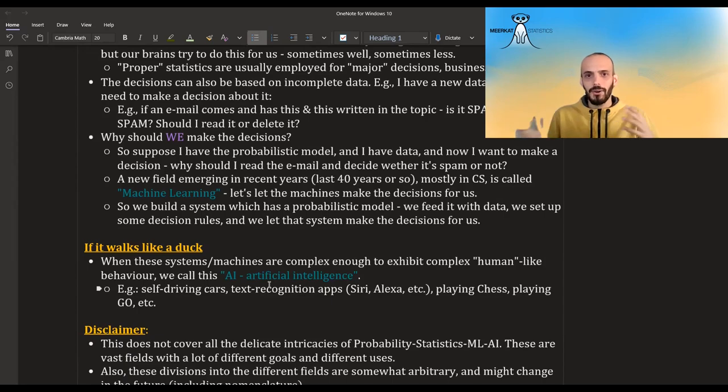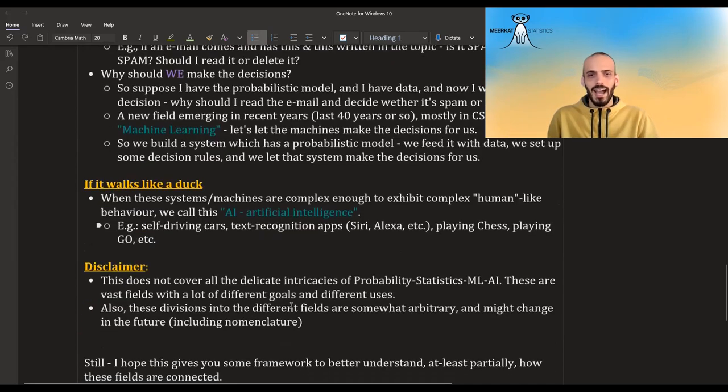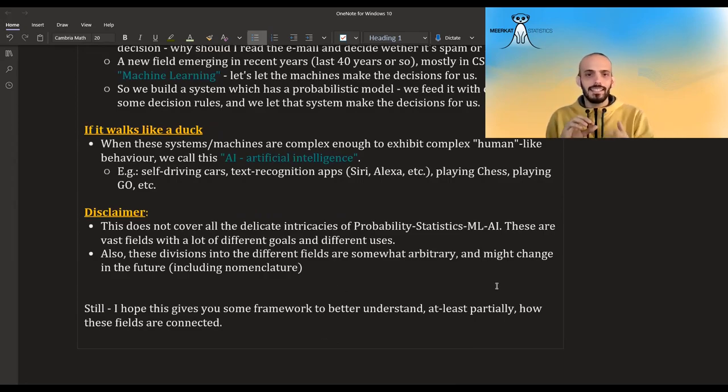And so this is how I see how all these things are connected. I just want to give out a disclaimer that this by no means covers all of the delicate intricacies of probability, statistics, machine learning, and AI. These are vast fields with a lot of different goals and different uses. And also these divisions into different fields are somewhat arbitrary. They might change with time in the future. The names might change, et cetera. Still, I hope that this video kind of helped you get some understanding of how these fields are connected and what is the basic objective of each of these fields on its own.